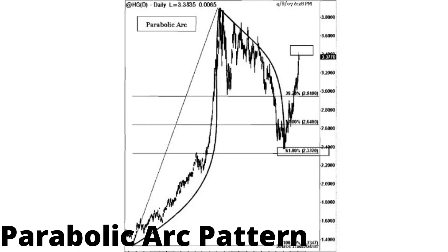Parabolic arc trading is rare, but does occur in both extreme bull and bear markets. This chart illustrates an example from the Copper Futures daily chart. From the bottom of 1.4 in July 2005 to April 2006, Copper Futures rallied to 3.8. Copper Futures retraced to 62% by January 2007, with a corrective parabolic arc forming to close near 2.4. The parabolic arc resulted in another corrective phase to the upside, bouncing back to the 62% level near 3.38.